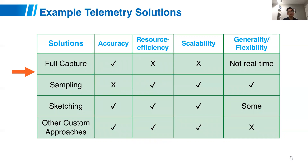Alternatively, people do sampling — trying to sample some data from the network traffic to compute some statistics, like NetFlow or sFlow. They are resource efficient, scalable, and general because you can adjust the sampling rates. But accuracy cannot be guaranteed. Many results in the literature show that they are not accurate enough for many of these tasks.